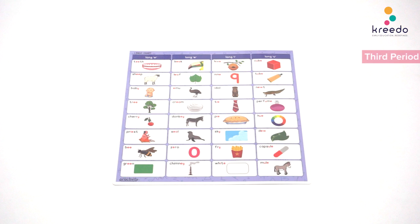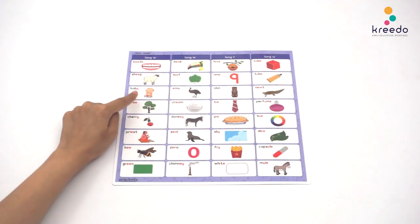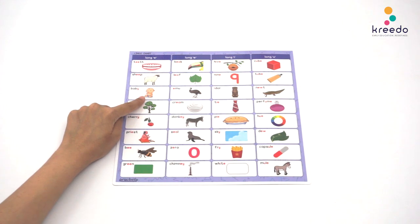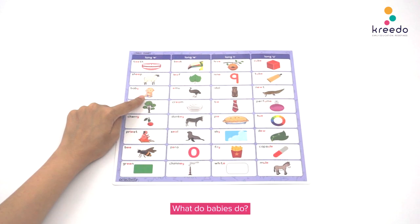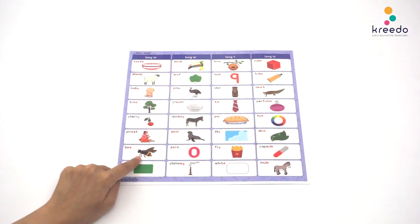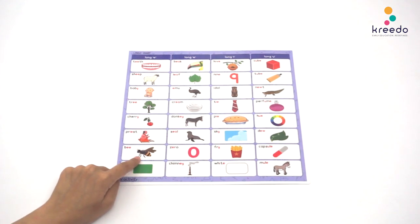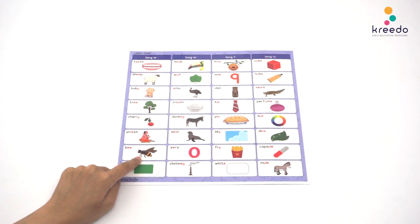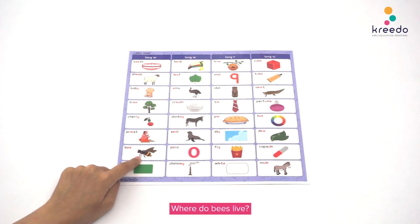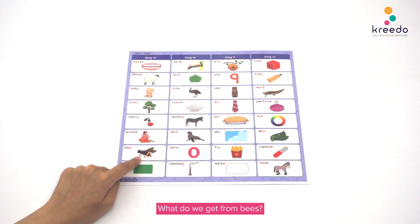Point to each object and ask what it is. Wait for the child to answer. Ask questions about each object. Point to the baby and ask what is this? Baby. Here are a few questions to ask: What does the baby drink? What do babies do? Point to the bee and ask what is this? Bee. Here are a few questions to ask: Where do bees live? What do we get from bees?